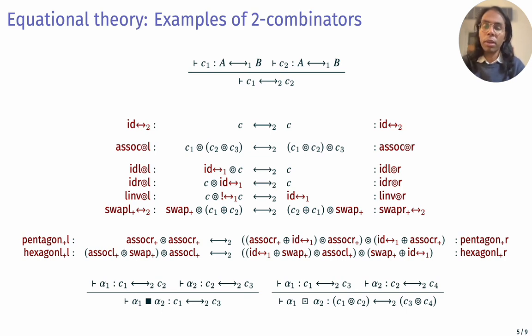And we also have coherences from monoidal categories, like the pentagon and hexagon, as we know from Mac Lane and Kelly and Laplaza. These two combinators can also be composed in different ways. Now, we'd like to show that this equational theory is sound and complete for this language.